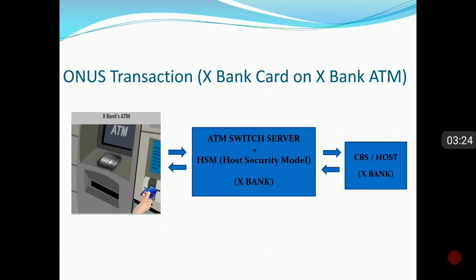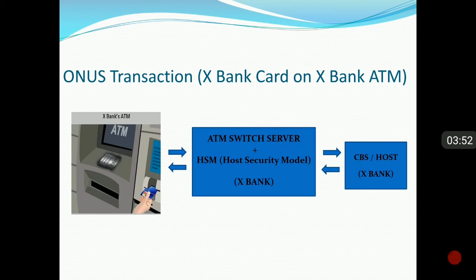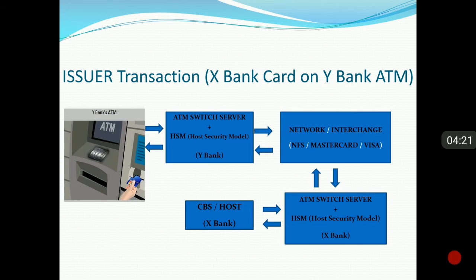Starting with on-us transactions: this is an X Bank card on an X Bank ATM — the ATM and the card both belong to X Bank. The transaction data, card data, and PIN block all come to the ATM switch server — which here means the ATM switch plus DCMS (Debit Card Management System). All card-related data is authenticated here, and if everything is okay, the response is passed to the CBS. The accounting is done at the CBS level, and CBS sends the response back to the ATM switch server, which then instructs the ATM to fulfil the customer's request.